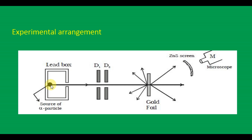This radioactive material emits alpha particles, enclosed in a lead box. After passing through the diaphragms D1 and D2, a narrow beam of alpha particles is emitted and directed as a narrow beam incident on a gold foil, where the alpha particles are scattered in all directions.